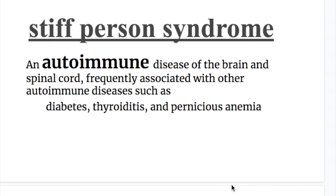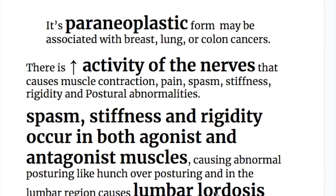Stiff person syndrome is an autoimmune disease of the brain and spinal cord, frequently associated with other autoimmune diseases such as diabetes, thyroiditis, thyrotoxicosis, and pernicious anemia. Its paraneoplastic form may be associated with breast, lung, or colon cancer.